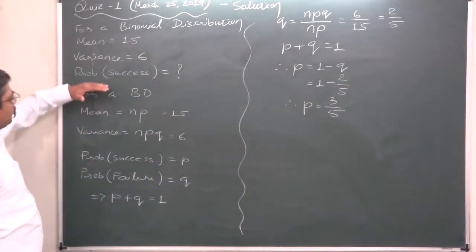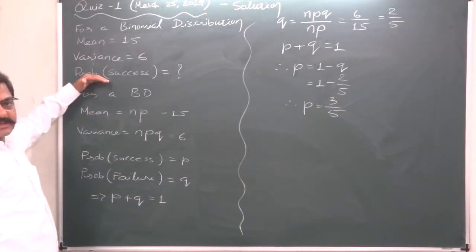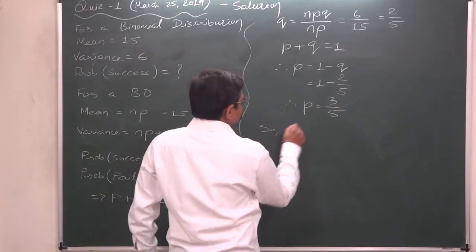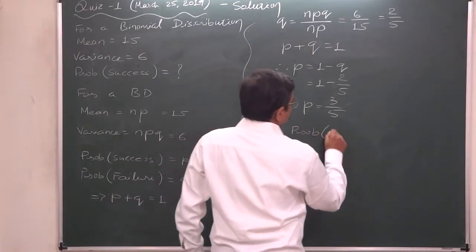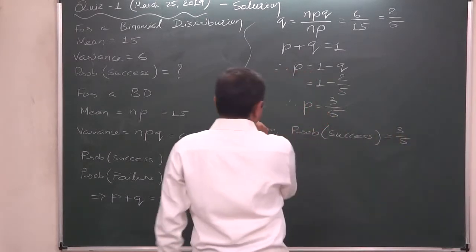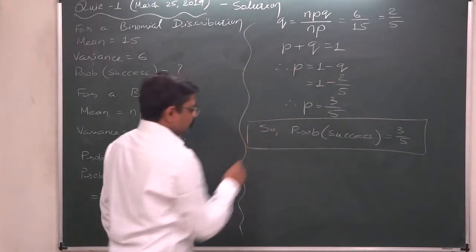And what is our question? What is the probability of success in this experiment? So, the probability of success is 3 by 5. You can say 0.6.